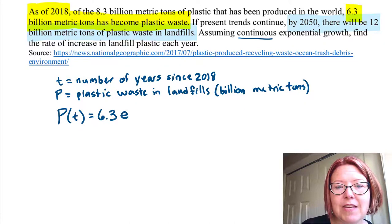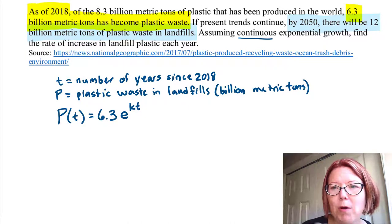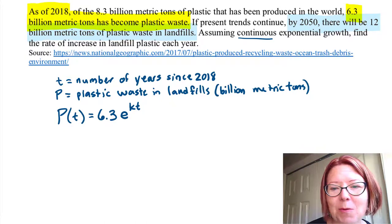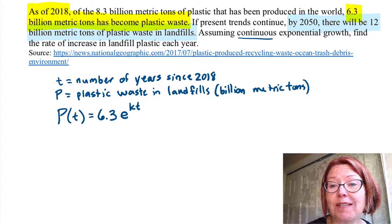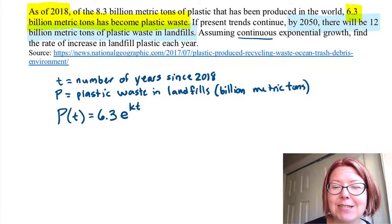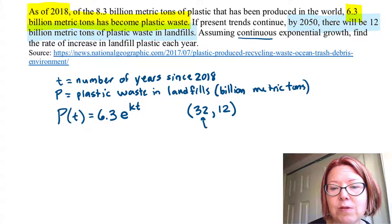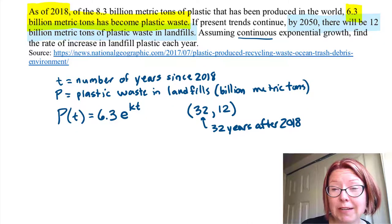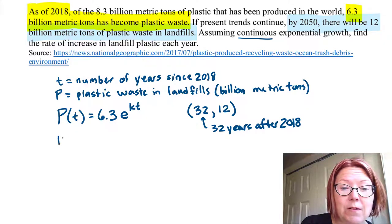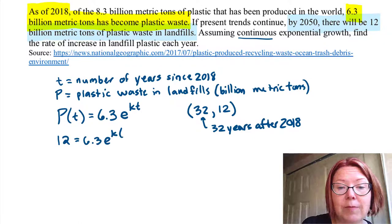With continuous exponential growth, the model is P(t) = 6.3 times e to the k times t. We don't know k, but we do have another point. The year 2050 is 32 years after 2018, so the second data point is (32, 12 billion metric tons). Let's plug in that data point and solve for k: 12 equals 6.3 times e to the k times 32.